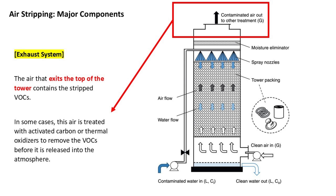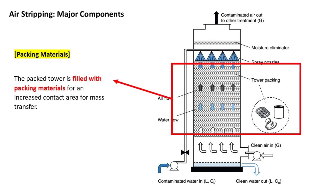The exhaust system handles air that exits the top of the tower, which contains the stripped VOCs. In some cases, this air is treated with activated carbon or thermal oxidizers to remove the VOCs before it is released into the atmosphere. In a typical air stripping process, groundwater containing VOCs is counter-currently contacted with air in a packed tower filled with packing materials for increased contact area and mass transfer. Clean water enters at the top, flows down by gravity, and VOC-contaminated water is fed upward along with the airflow from the blower at the bottom. The VOCs are transferred to the gas phase during intimate gas-liquid contact, and the equilibrium distribution between gas and water phases is described by Henry's Law. The VOC-laden exhaust air must then be treated by passing it through an activated carbon column.